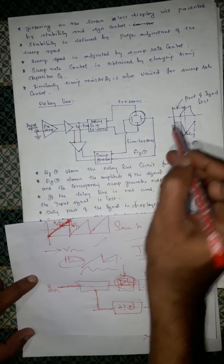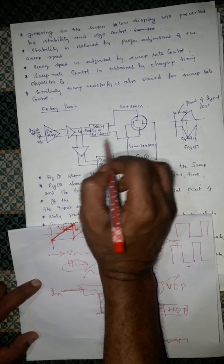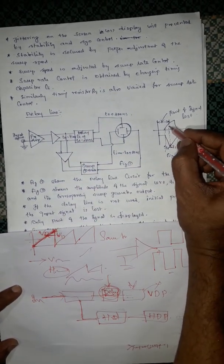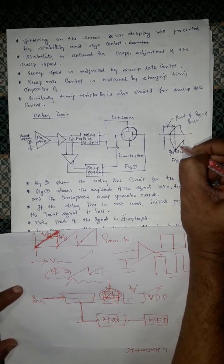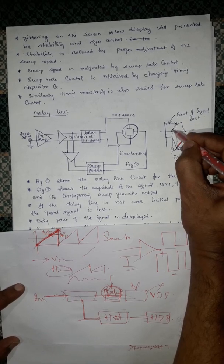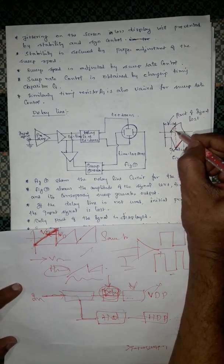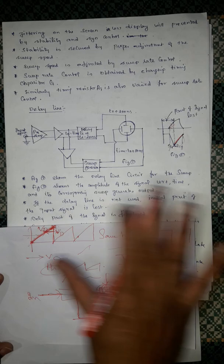If delay is not present, what happened? The sweep will start at this point only. Sweep will start here. Previously, this portion of the input signal will be lost.